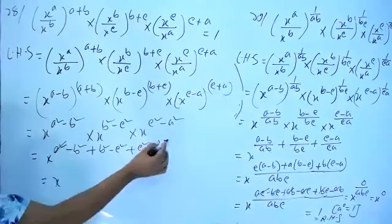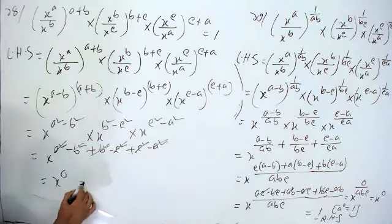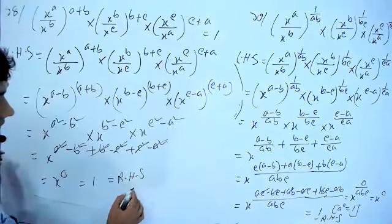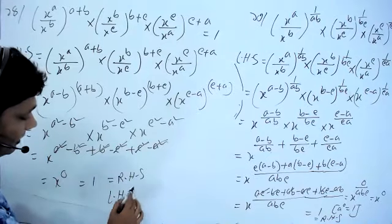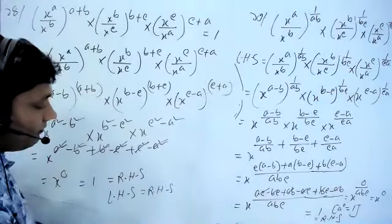The exponents cancel: a² - b² + b² - c² + c² - a² = 0. Therefore left hand side equals right hand side. Proved.